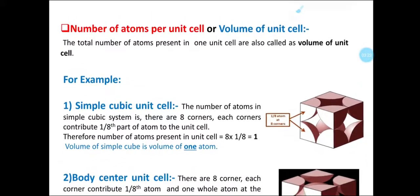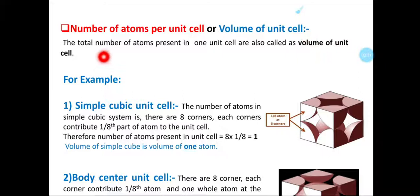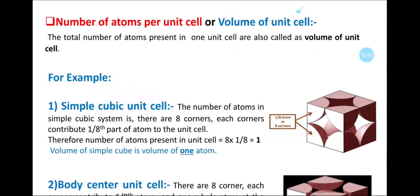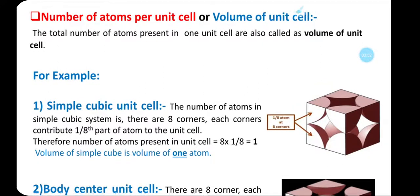The next topic is the number of atoms per unit cell and the volume of the unit cell. The total number of atoms present in a single unit cell is also related to the volume of the unit cell. Let us see the example for the simple cube.